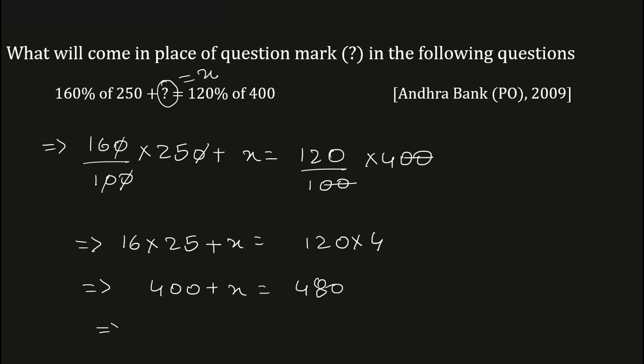So x equals 480. Now bring the term from the LHS to the RHS—that is, 400 will become minus 400.